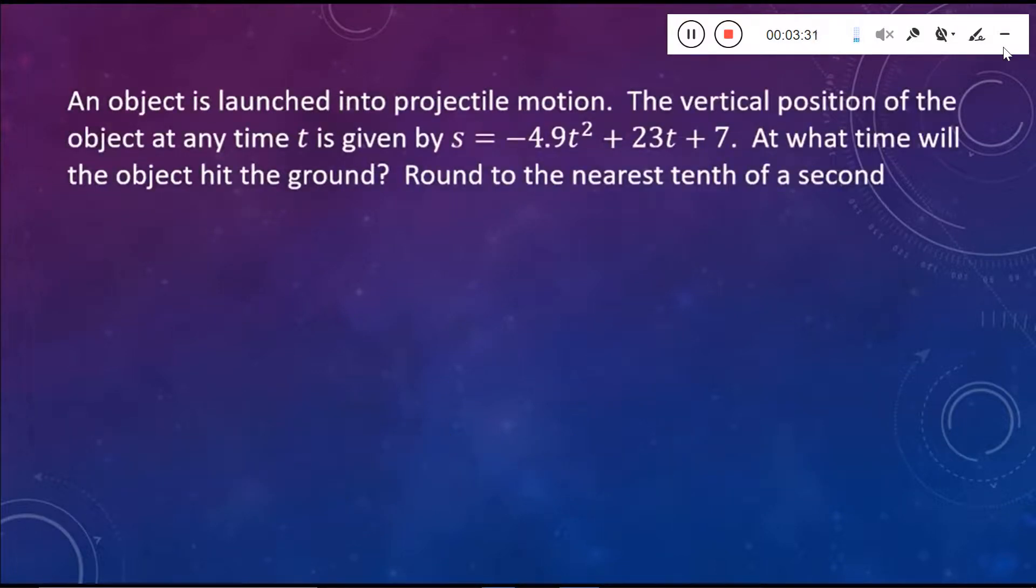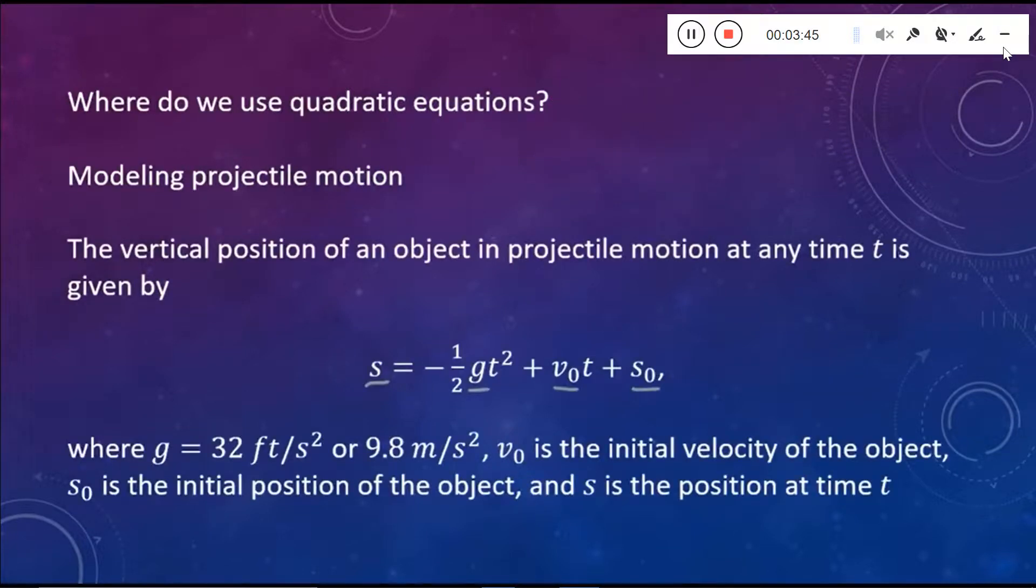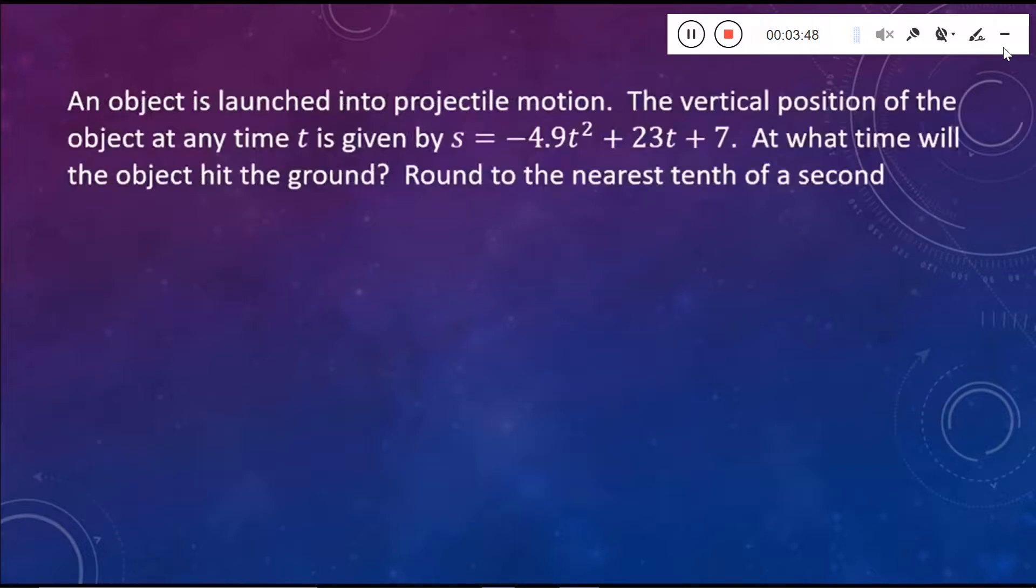So we know that it's in meters per second. We can look at the number in front of our t value and see that that's our initial velocity, so 23 meters per second. And then we can look at the constant that we add on, that plus 7, and we see that that is our starting height. That's how far we are above the ground there. And initial position is meters.